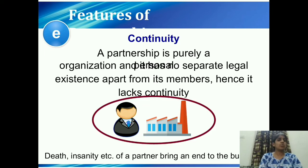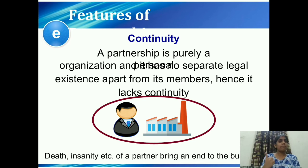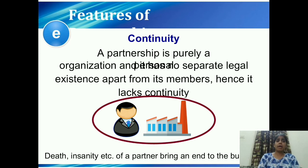The fifth feature is continuity — a partnership lacks continuity. The business and the partners have separate legal existence. Death, insanity, etc. of a partner bring the business to an end. If I and my brother are partners with AB Enterprise, then I, my brother, and AB Enterprise are all separate legal entities. If I die, our business will come to an end; if my partner dies, obviously the business will come to an end. That is why continuity is not there.